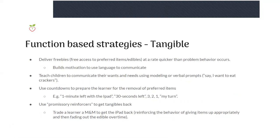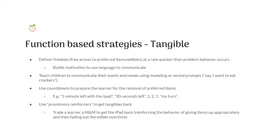These strategies are for children engaging in behaviors to gain access to items — what we call tangible. One way to treat this is to deliver freebies: free access to preferred items or edibles. You want to do this at a quicker rate than problem behavior occurs. If you know your child hasn't had access to the iPad all day and it's 15 minutes before dinner, give it to him before problem behavior as a freebie — 'I love the way you're sitting patiently, here's some iPad time.' You're beating them to engaging in problem behavior.